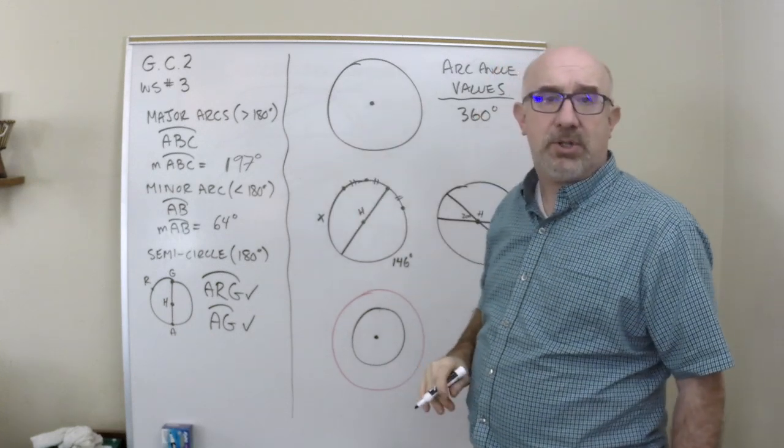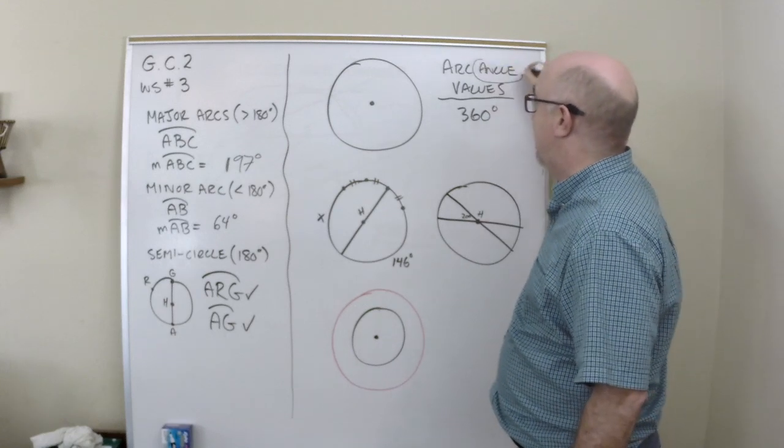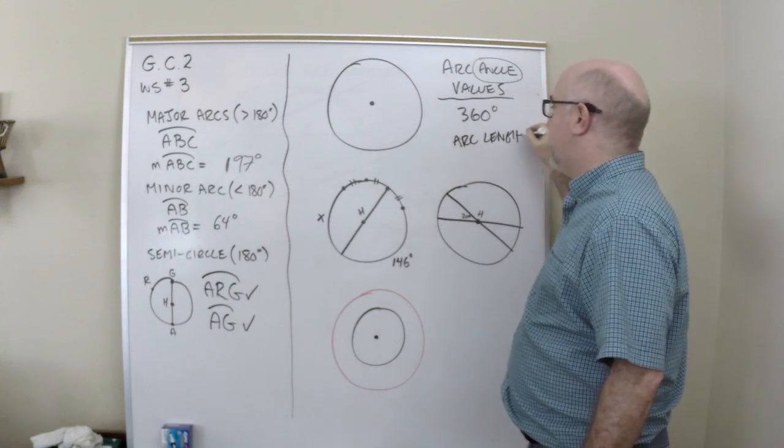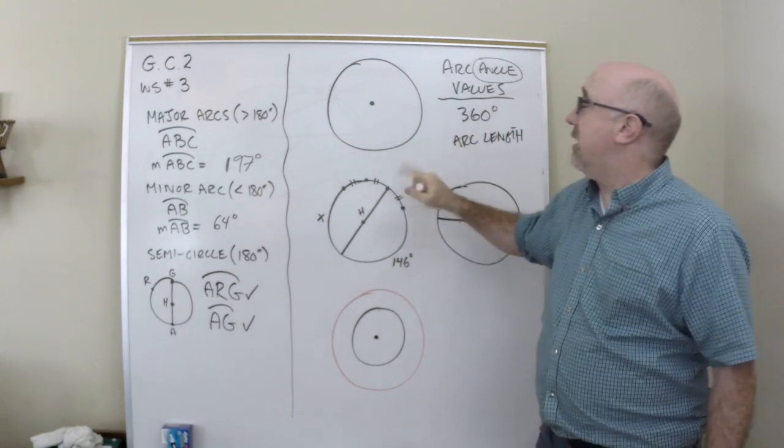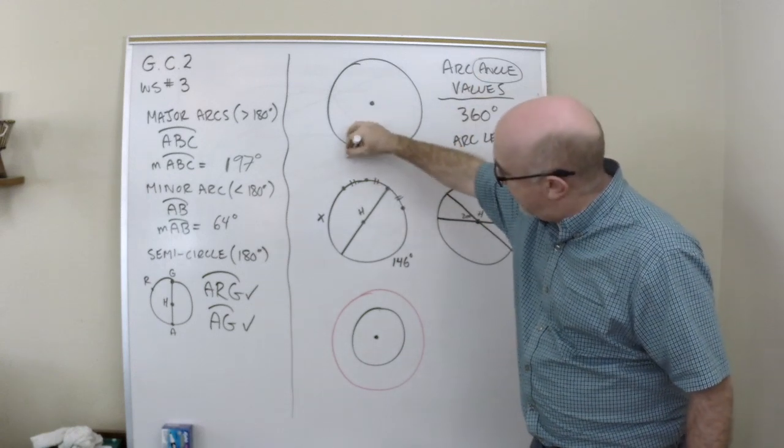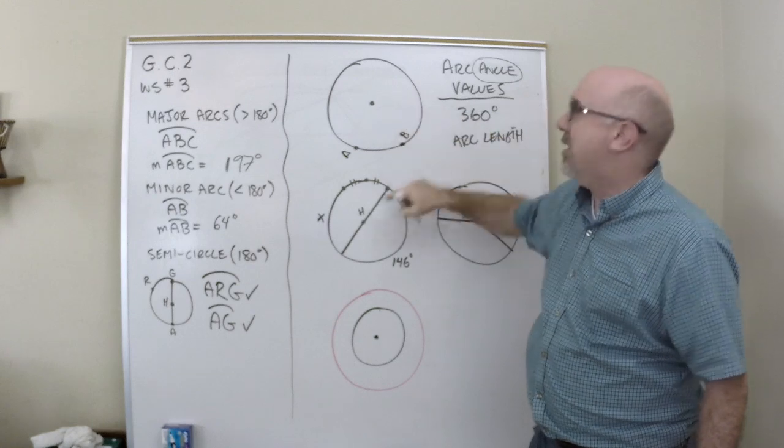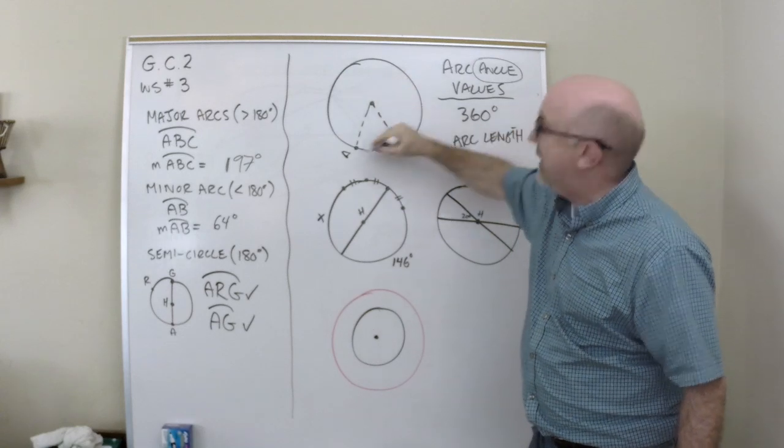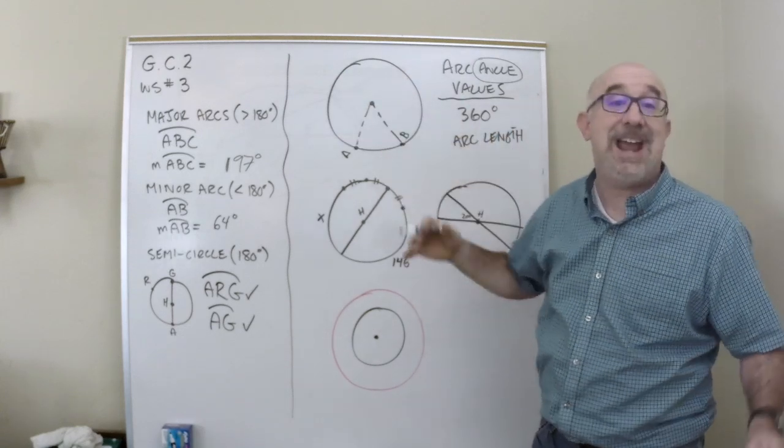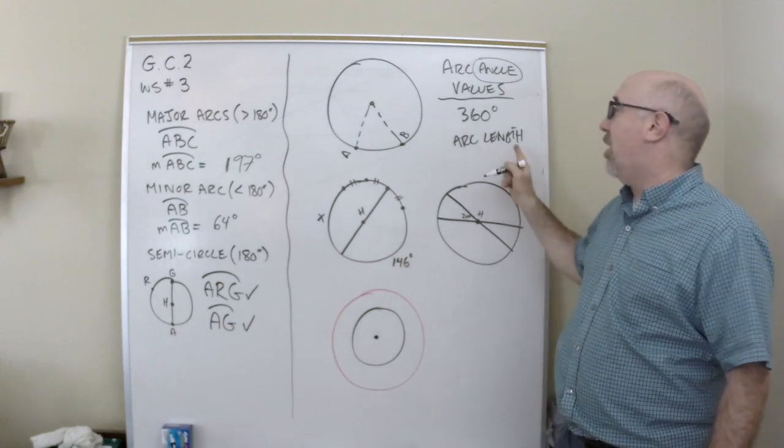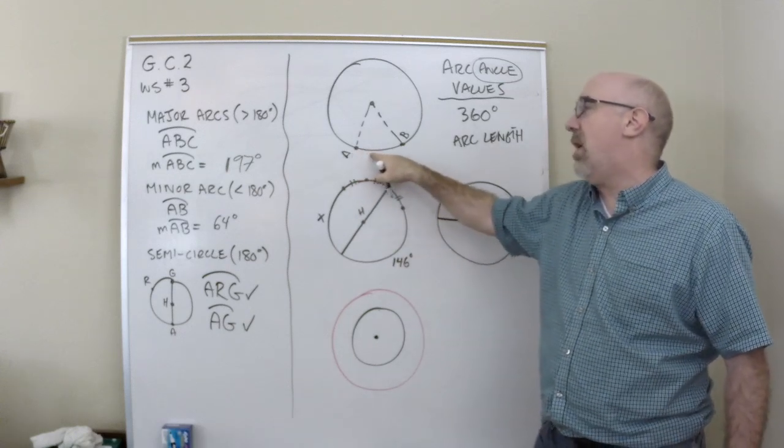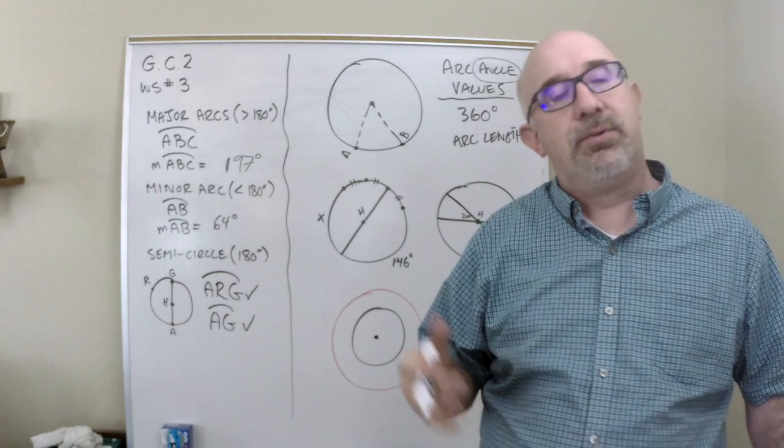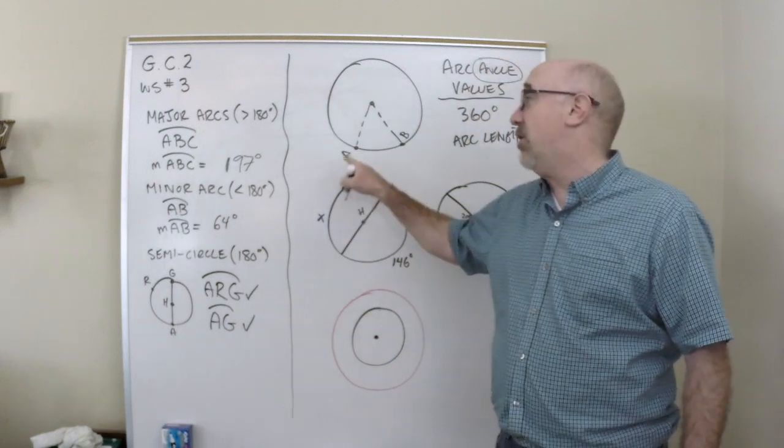You can measure an arc two ways. You can measure its arc angle or its arc length. The difference in those two is arc angle refers to, if I'm saying from A to B, I'm asking how much of the 360 degrees, how much of that 360 degrees am I using? So it's an angle measure. Arc length would be how far is it to walk along the edge of that circle. And you'd say, oh that's like 2.7 centimeters or whatever it is. It's like a walking distance along the arc.